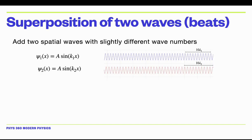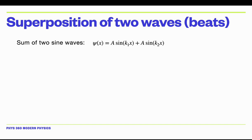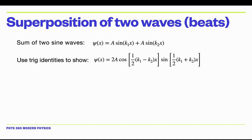Let's consider adding two waves. The waves are going to have the same amplitudes, a, but different wave numbers k. So wave one will have wave number k1, and wave two will have wave number k2. This is a homework problem where you can show, just using trig identities, that if you add these two sine functions, you can write them as the product of a sine and a cosine term.